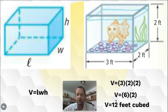Just doing one at a time, three times two equals six. So, volume equals six times two, and six times two is 12. So, volume equals 12 feet cubed.